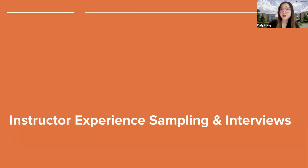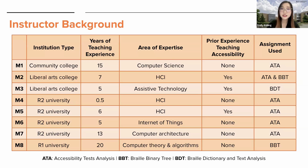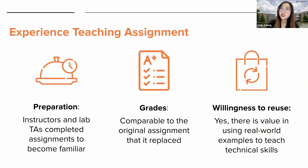The instructors who participated came from different institutions, including Community College, Liberal Arts College, as well as both R1 and R2 universities. Their teaching experience ranged from 0.5 to 20 years, and it is important to note that five of them did not have any prior experience teaching accessibility-related topics. Most instructors completed the assignments themselves to become familiar with the mechanics and concepts, and some also asked their lab TAs to complete it. The accessibility assignments were comparable in grades to the original assignments they replaced, showing that CS learning objectives were still met. Most instructors indicated willingness to reuse the assignments in the future because they found value in using real-world examples to teach technical skills.